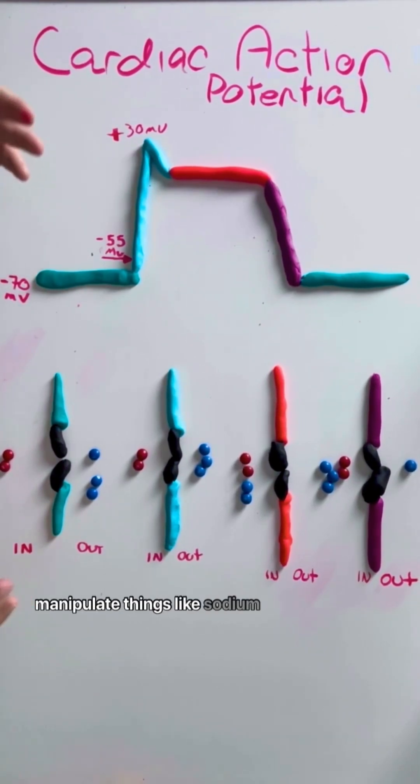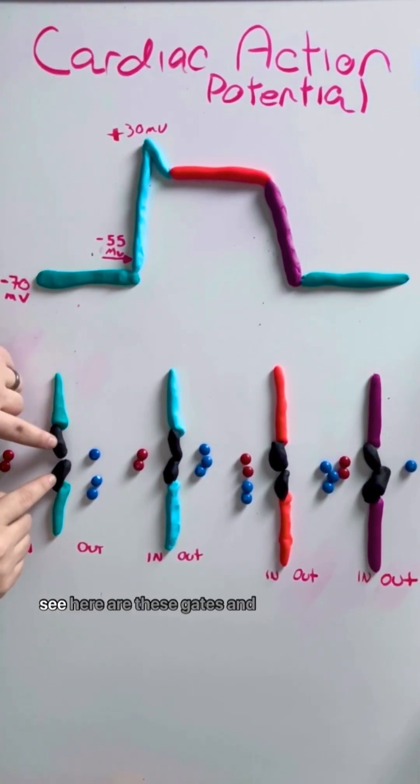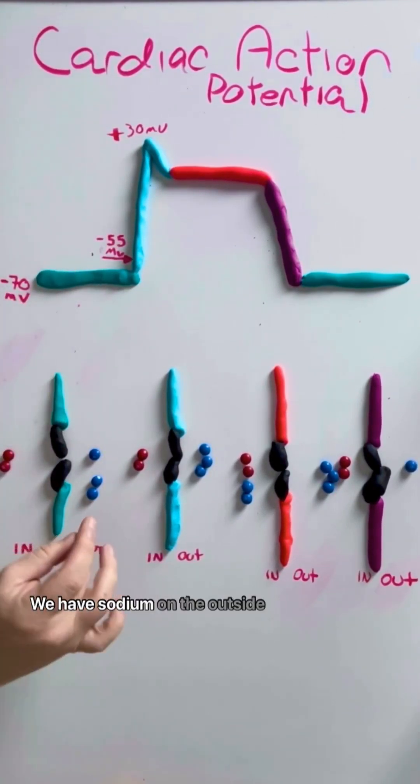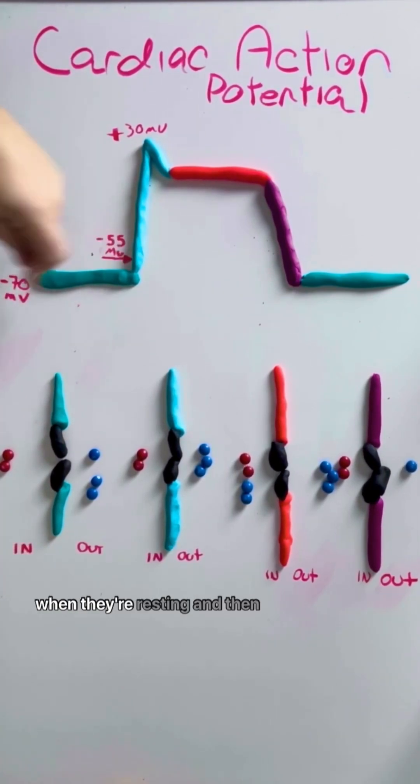Well, we're going to manipulate things like sodium and potassium. And so you see here are these gates. And at resting potential right here, our gate is closed, meaning that nothing is shifting. We have sodium on the outside and potassium on the inside like so. And that's where their prospective states are when they're resting.